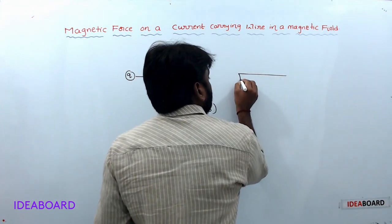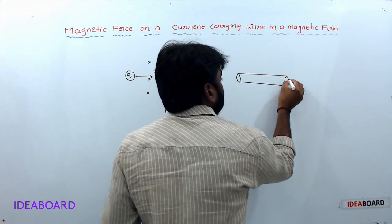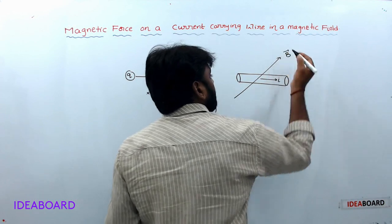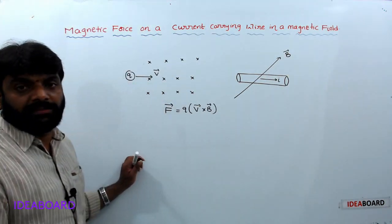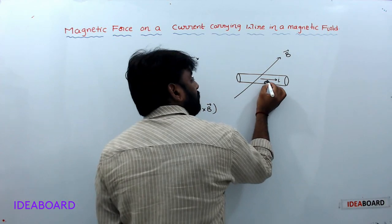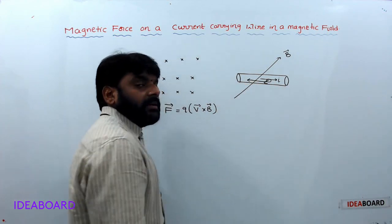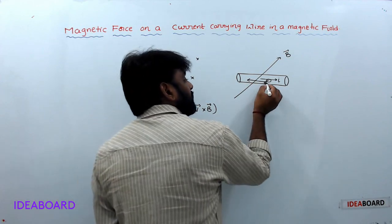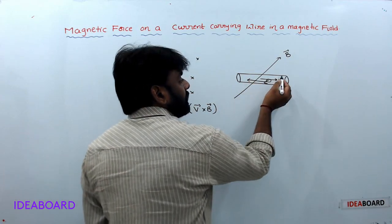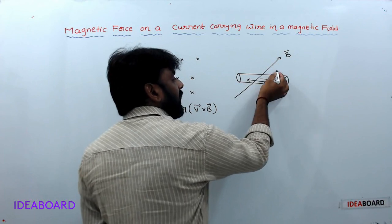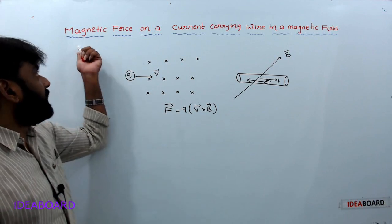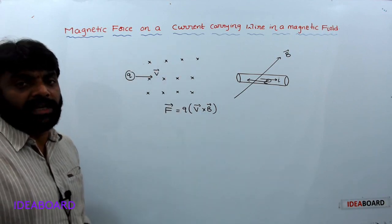If a current-carrying conductor is placed inside a magnetic field, current-carrying conductor means electrons are moving — electrons are charged particles in motion. So force acts on them. We find out the net force on all the electrons, which gives us the magnetic force on a current-carrying wire in a magnetic field.